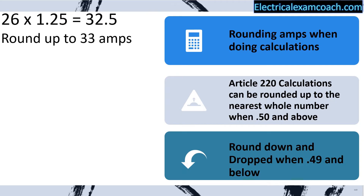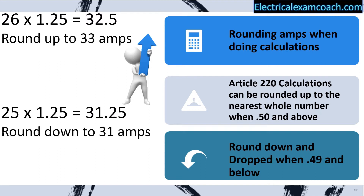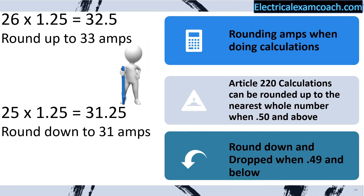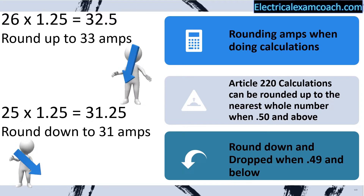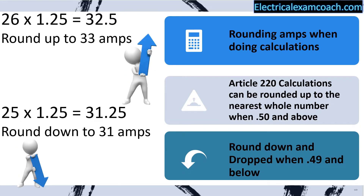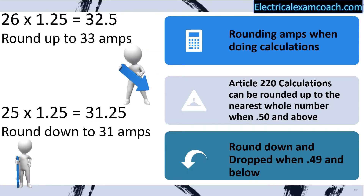Let's imagine we have a scenario of 26 amps, and after we do all of our math, it equals 32.5 amps. In this case, we're gonna round up to 33 amps. Now let's imagine a similar scenario where our answer is 31.25 — that's 0.49 or less, so we are going to round down. And that's how we're gonna deal with all of our numbers in load calculations.